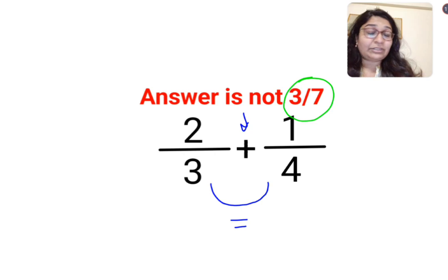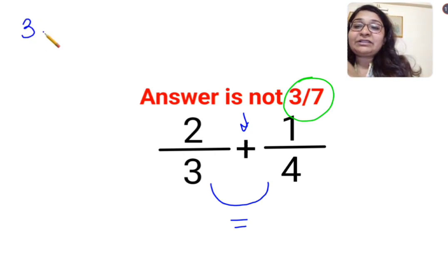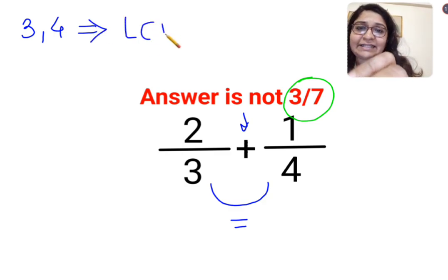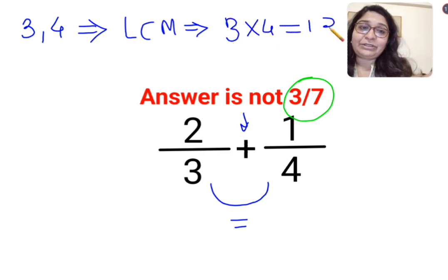So what are the denominators? 3 and 4. Now, the next thing we need to do is, in order to make them equal, we need to find the LCM. The LCM of 3 and 4 is 3 multiplied by 4, which is 12, because 3 is a prime number.